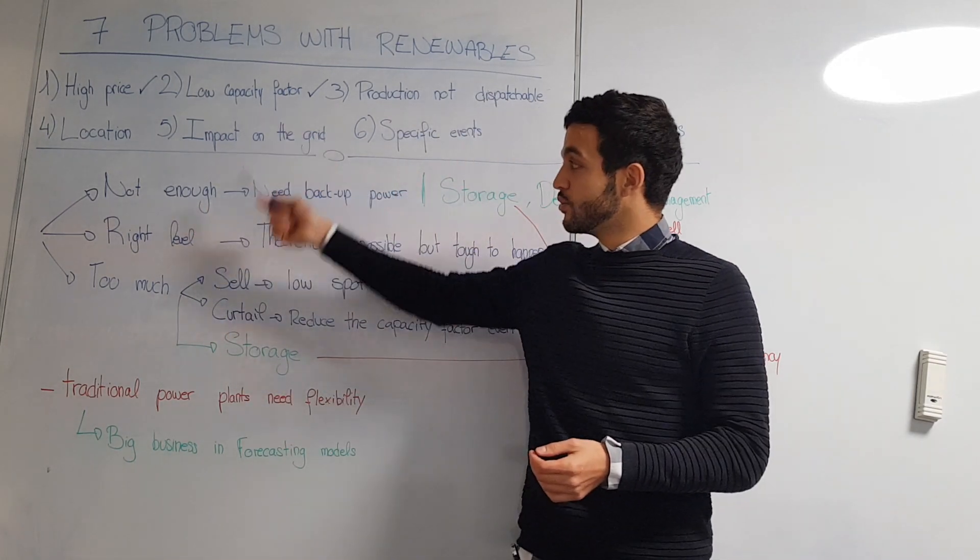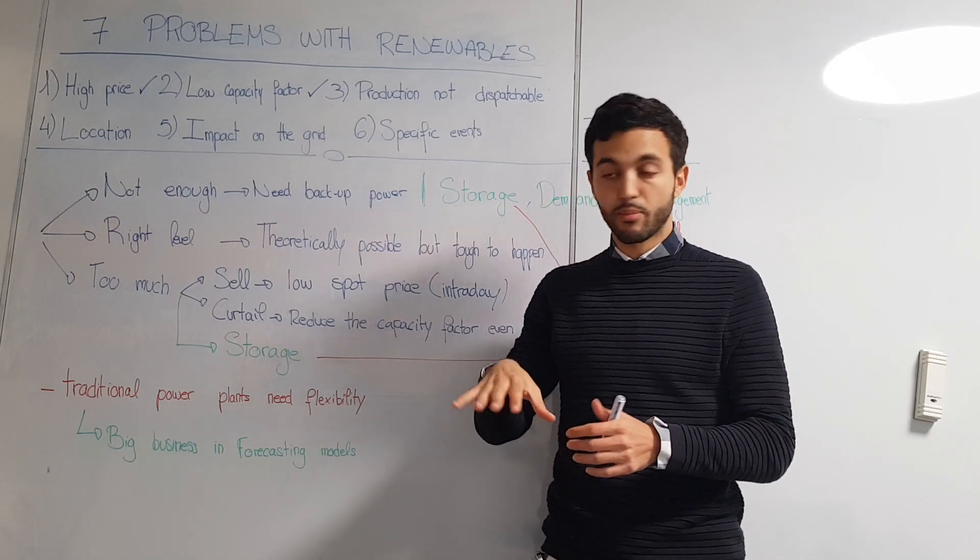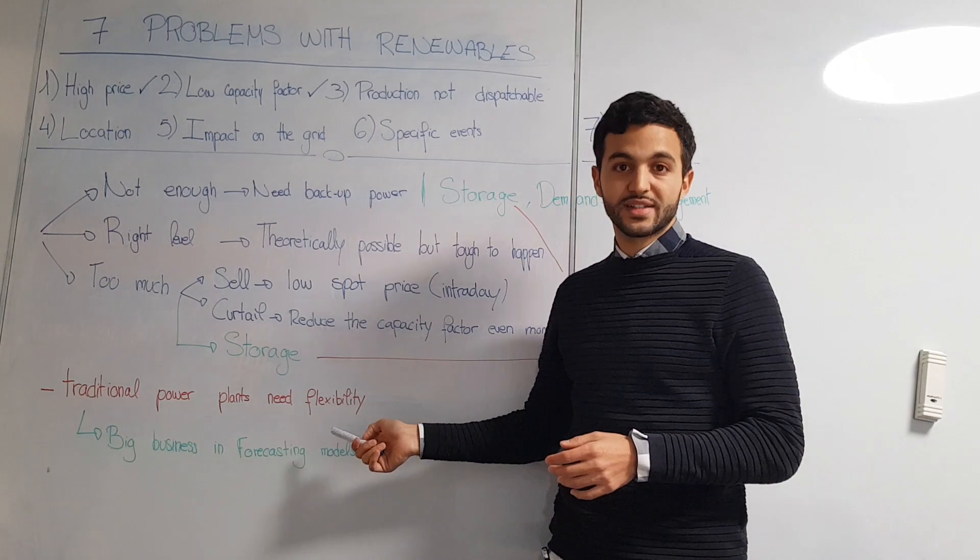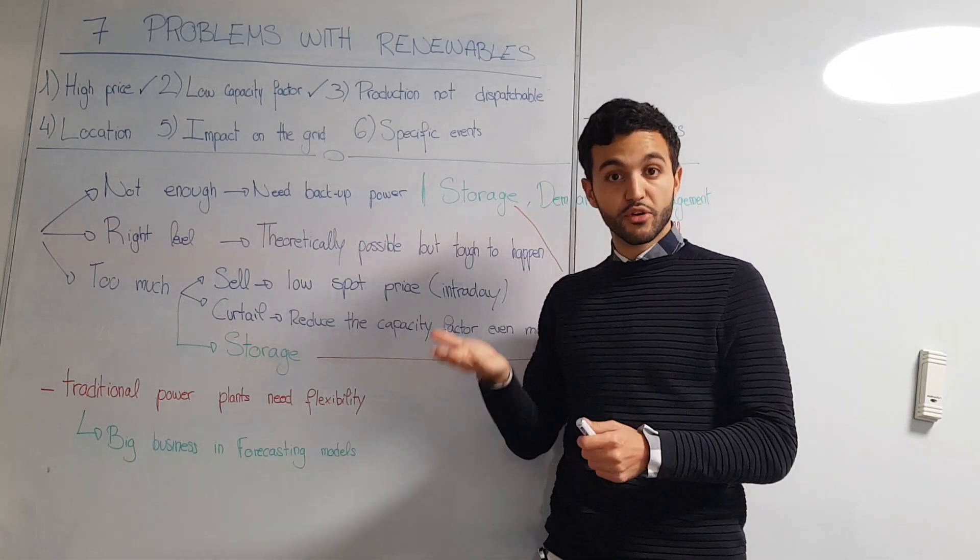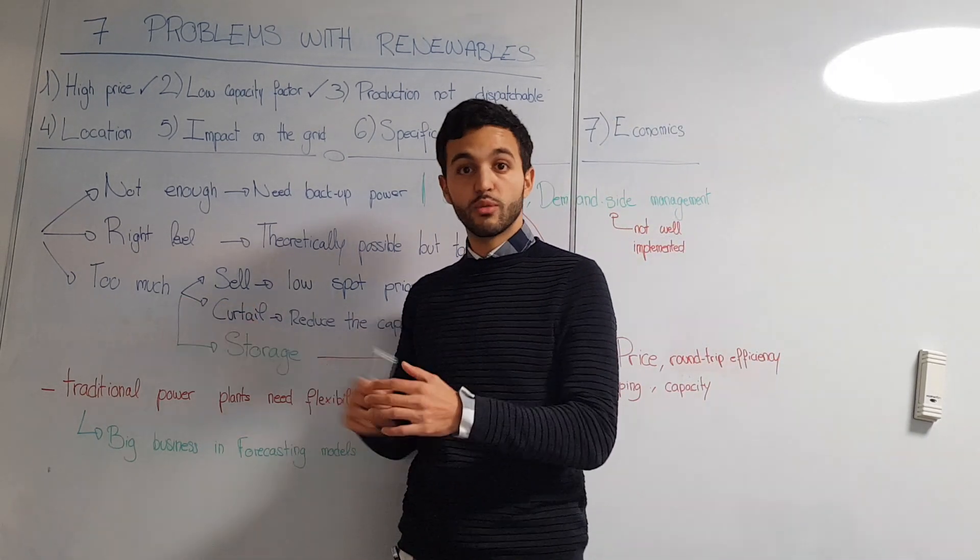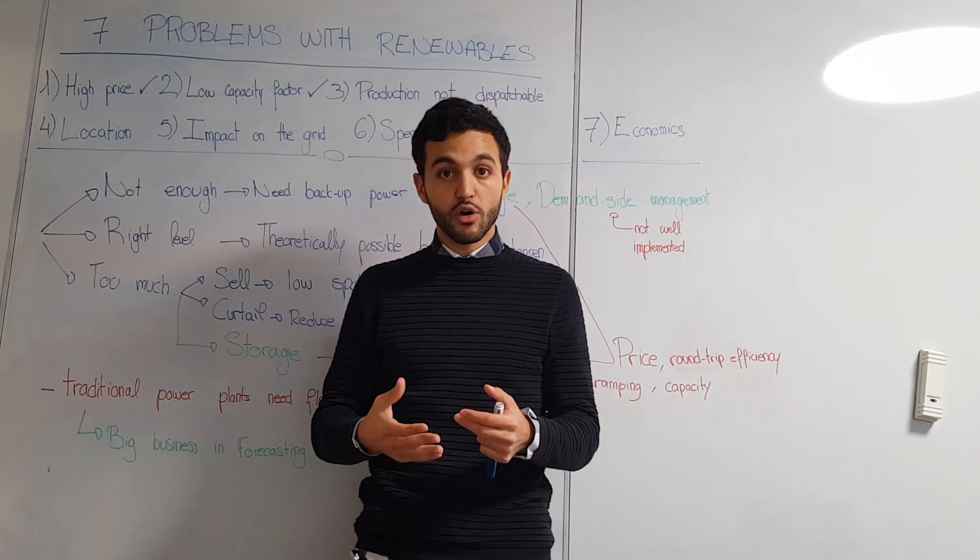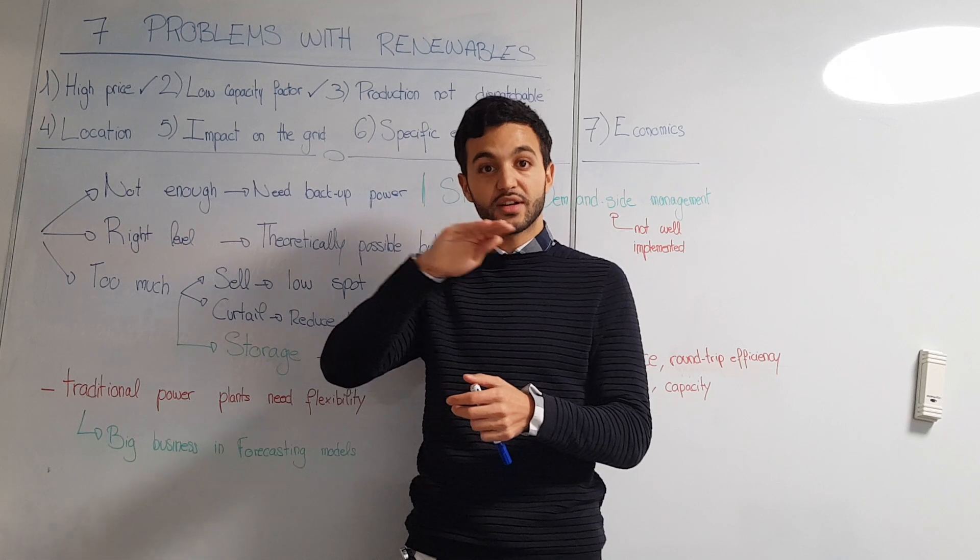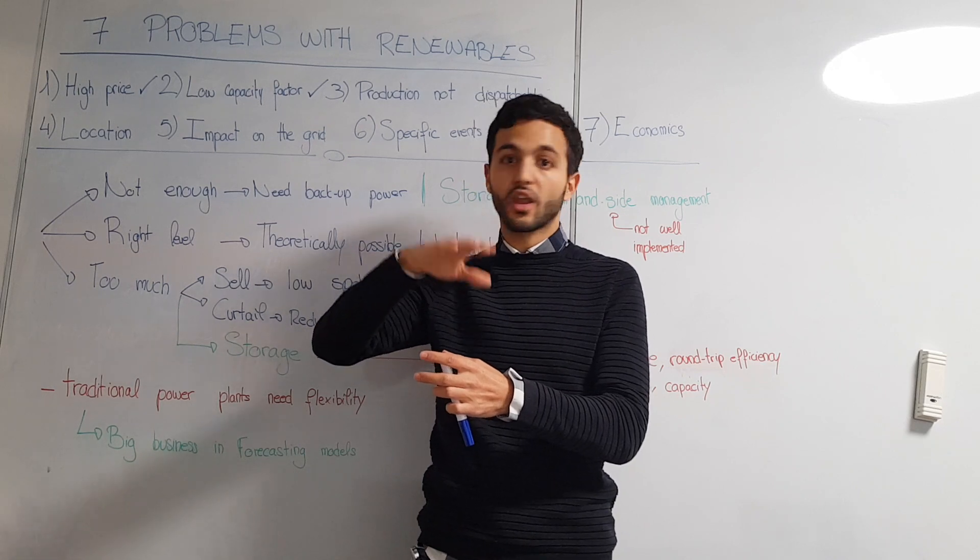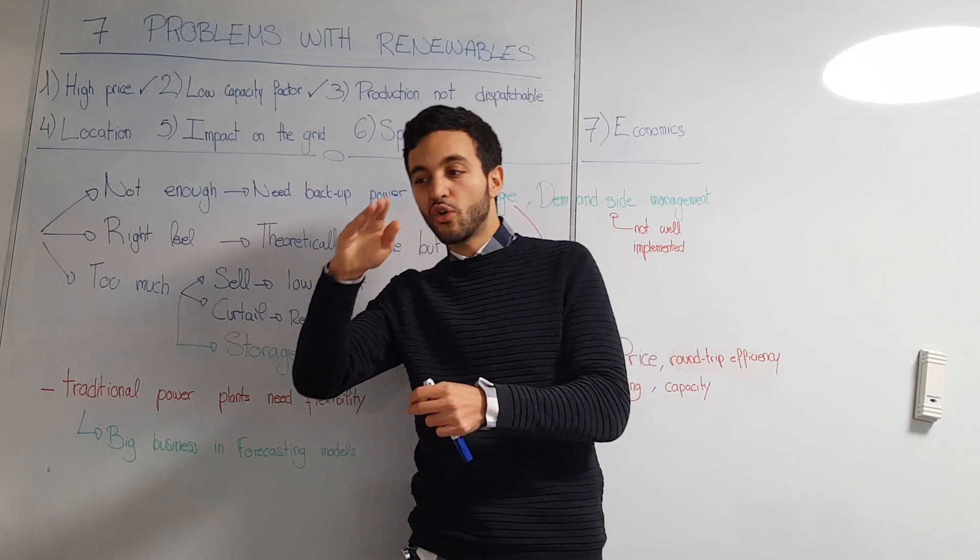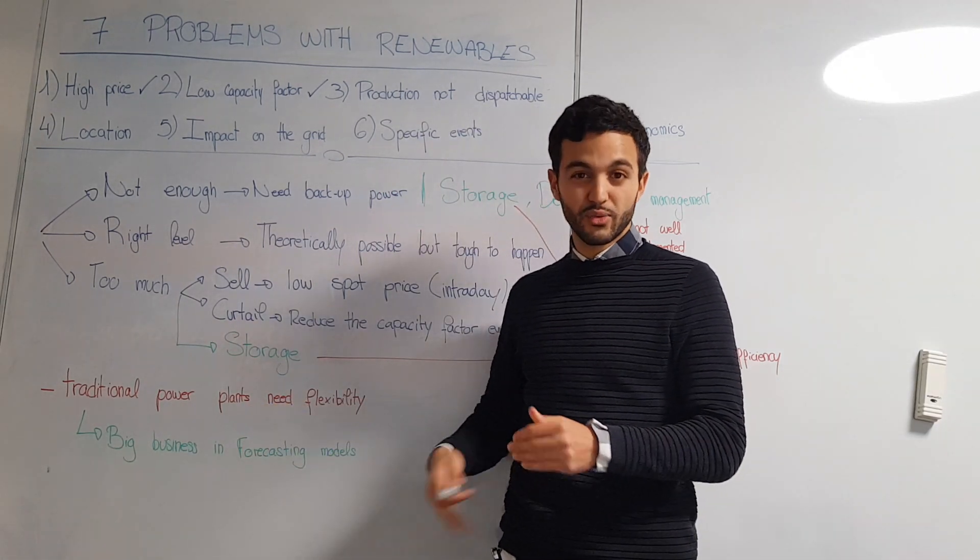The thing we see with the dispatchability of renewables is that it will put a lot of pressure on traditional power plants, so they will need to adjust their production constantly. If you don't have enough, you'll have to increase the production of traditional power plants, and if you have too much, you'll have to decrease the production. This is quite problematic because some of them are not flexible. For example, nuclear power plants - if you're producing at a certain level, your uranium is very hot, everything is in this condition, you cannot stop producing directly. You'll need a long time to reduce production.